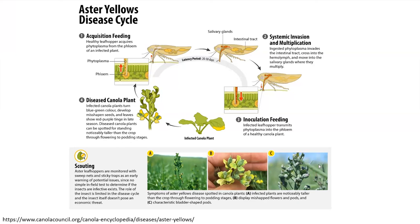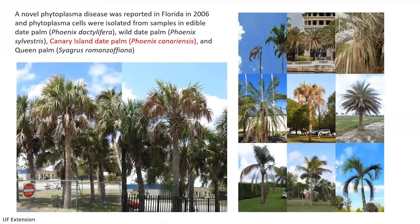This disease has caused big threats to canola production, among other crops. I'm from Florida and came to Missouri two years ago. One of my projects involves lethal yellowing or lethal browning disease, which is caused by a novel phytoplasma first reported in 2006.